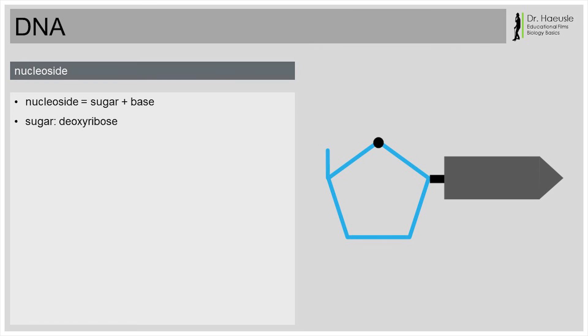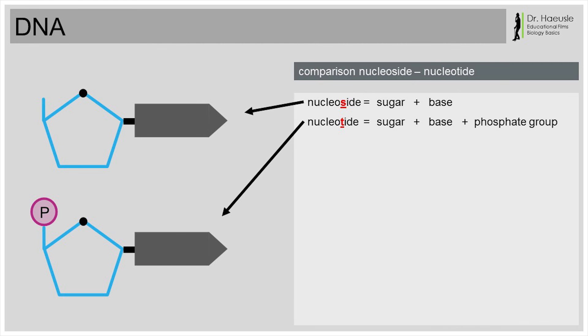A phosphate group is now attached to each nucleoside. The phosphate group is sometimes only called phosphate. It is bound to the sugar molecule of the nucleoside. Sugar, base and phosphate form one building block of the DNA, a so-called nucleotide. So, a nucleoside plus one phosphate group is a nucleotide. Correct.